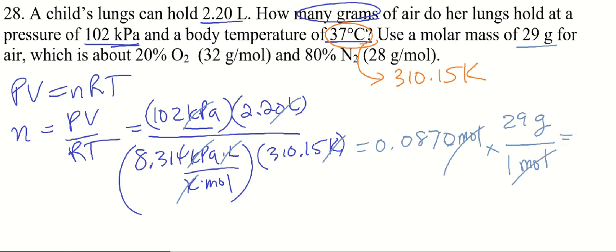That number is still in my calculator, so I'm just going to multiply that by 29. And our final answer is going to be 2.5, 2 sig figs, because that value only has 2. Our final answer can't be more precise than our least precise number or measurement. So that's grams of air.